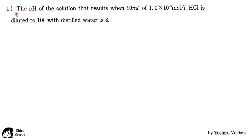One says, the pH of the solution that results when 10 milliliters of 1.0 times 10 to the minus 5 mole per liter of HCl is diluted to 10 liters with distilled water is 8. In order to find the concentration of hydrogens, we need the number of moles and the total volume. The number of moles, calculating, we get 10 to the minus 7 moles. The total volume is 10 liters plus 10 milliliters, which is approximately equal to 10 liters.